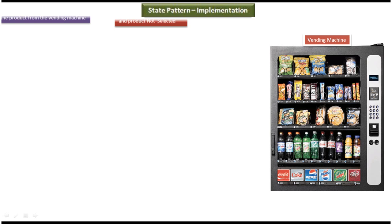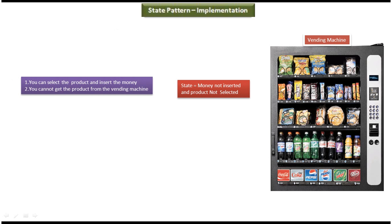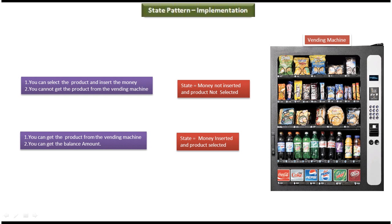Suppose the vending machine's internal state is money not inserted and product not selected. Then the operations you can do are: select the product and insert the money. But the vending machine won't dispense the product until you complete both the money insertion and product selection. Once you insert the money and select the product, the state will change to money inserted and product selected. In this state, the vending machine will dispense the product and also give a balance amount if applicable. So based on the internal state, the behavior of the vending machine is different — this is the best example of state design pattern.